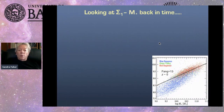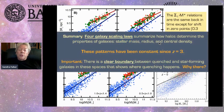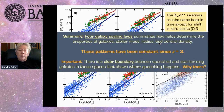Looking at sigma-1 versus mass back in time shows similar morphologies — blue star-forming galaxies with the same slope and only a change in zero point going back in time. To summarize: four galaxy scaling laws showing how halos determine the properties of galaxies — stellar mass, radius, and central density while star-forming. These patterns have been constant all the way back to z of 3, indicating that the physics back then is the same as the physics now. There is a clear boundary between quenched and star-forming galaxies in these spaces showing where quenching happens.